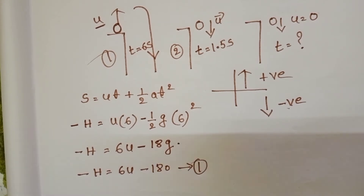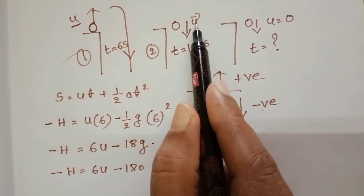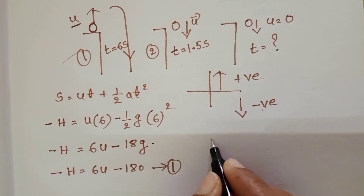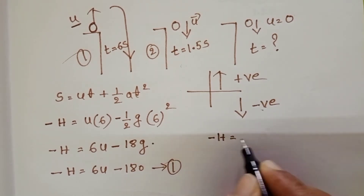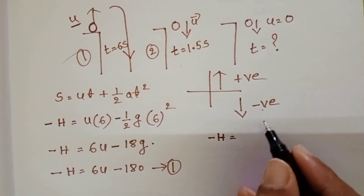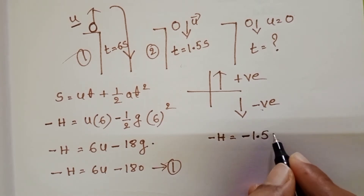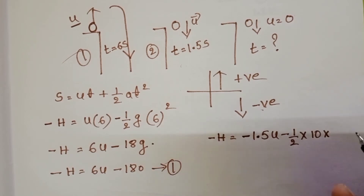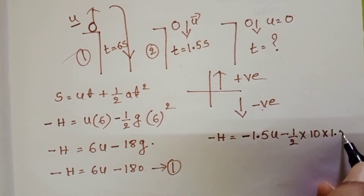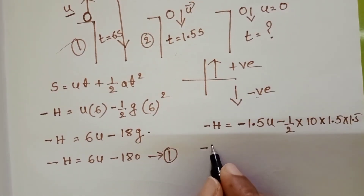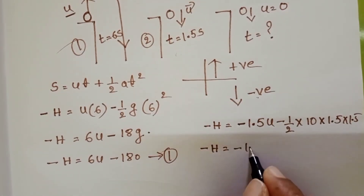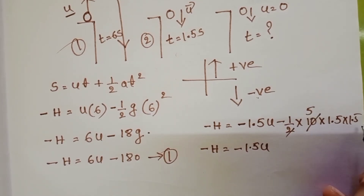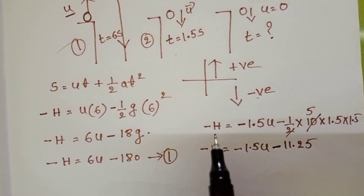For the second ball, U is negative (thrown downward), H is negative, and G is also negative. The equation becomes: −H = −1.5U − ½(10)(1.5²) = −1.5U − 11.25. This is the expression for Ball 2, and we want the height H from this equation as well.